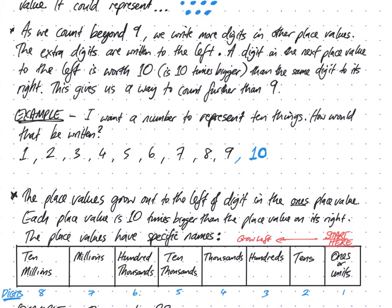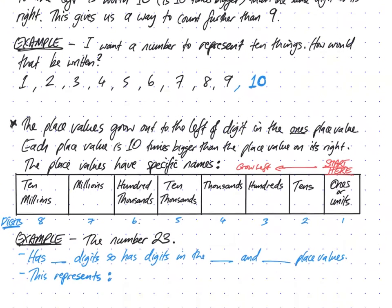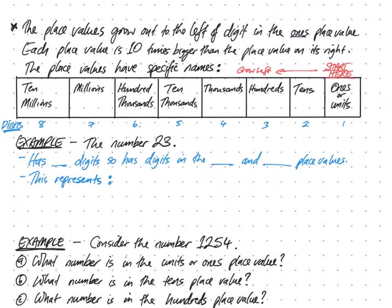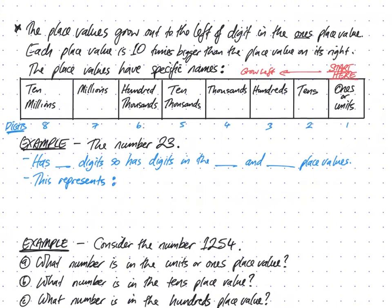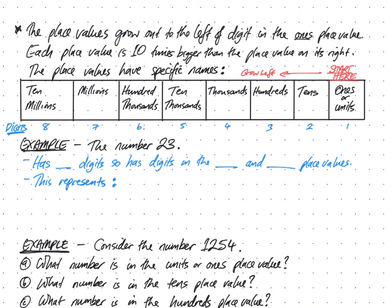The place values grow out to the left of the digit in the ones place. You can see we went from 9 here, then got an extra number to the left. Each place value is 10 times bigger than the place value to its right. The place values have specific names. There's no way to work these out - you just have to remember them.